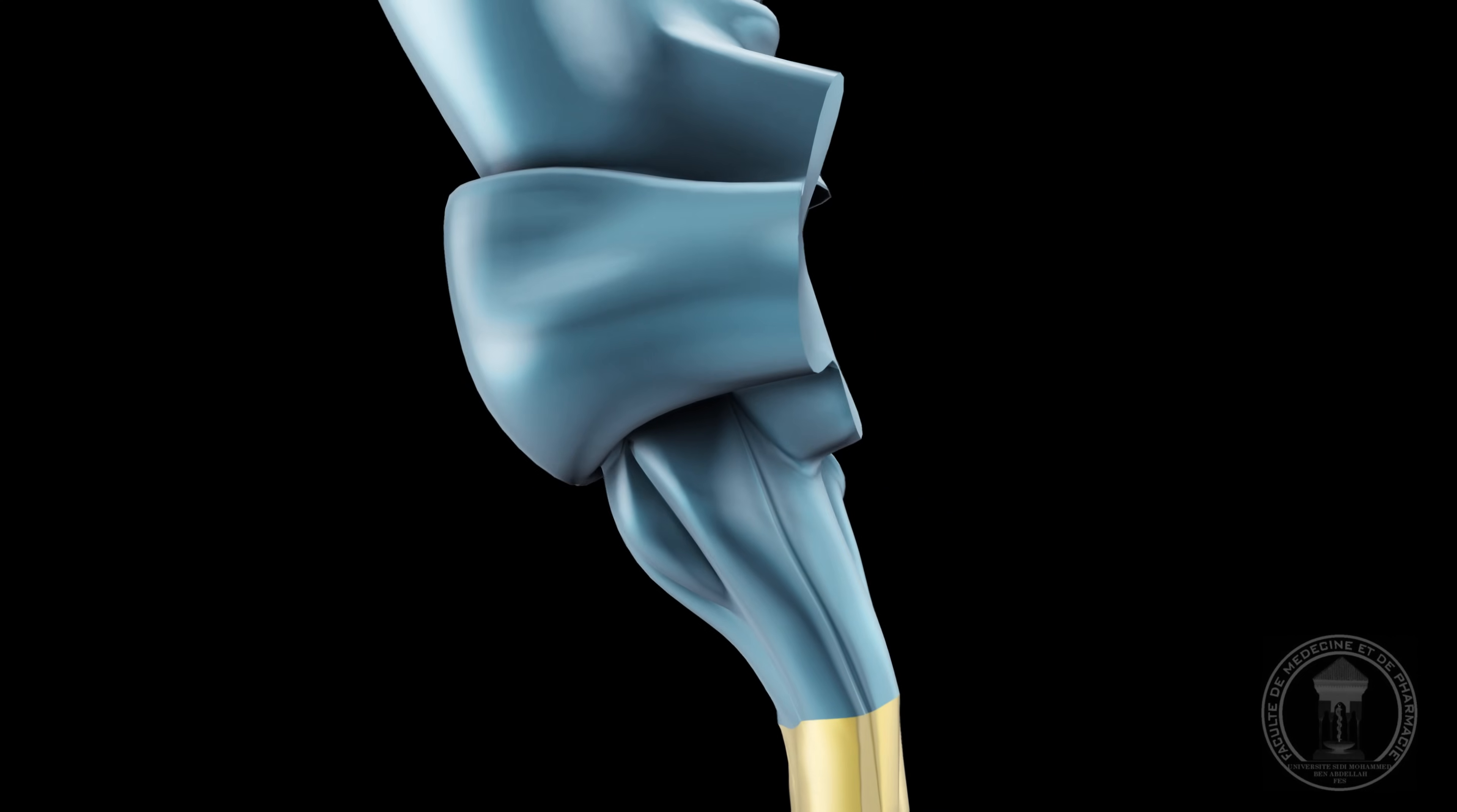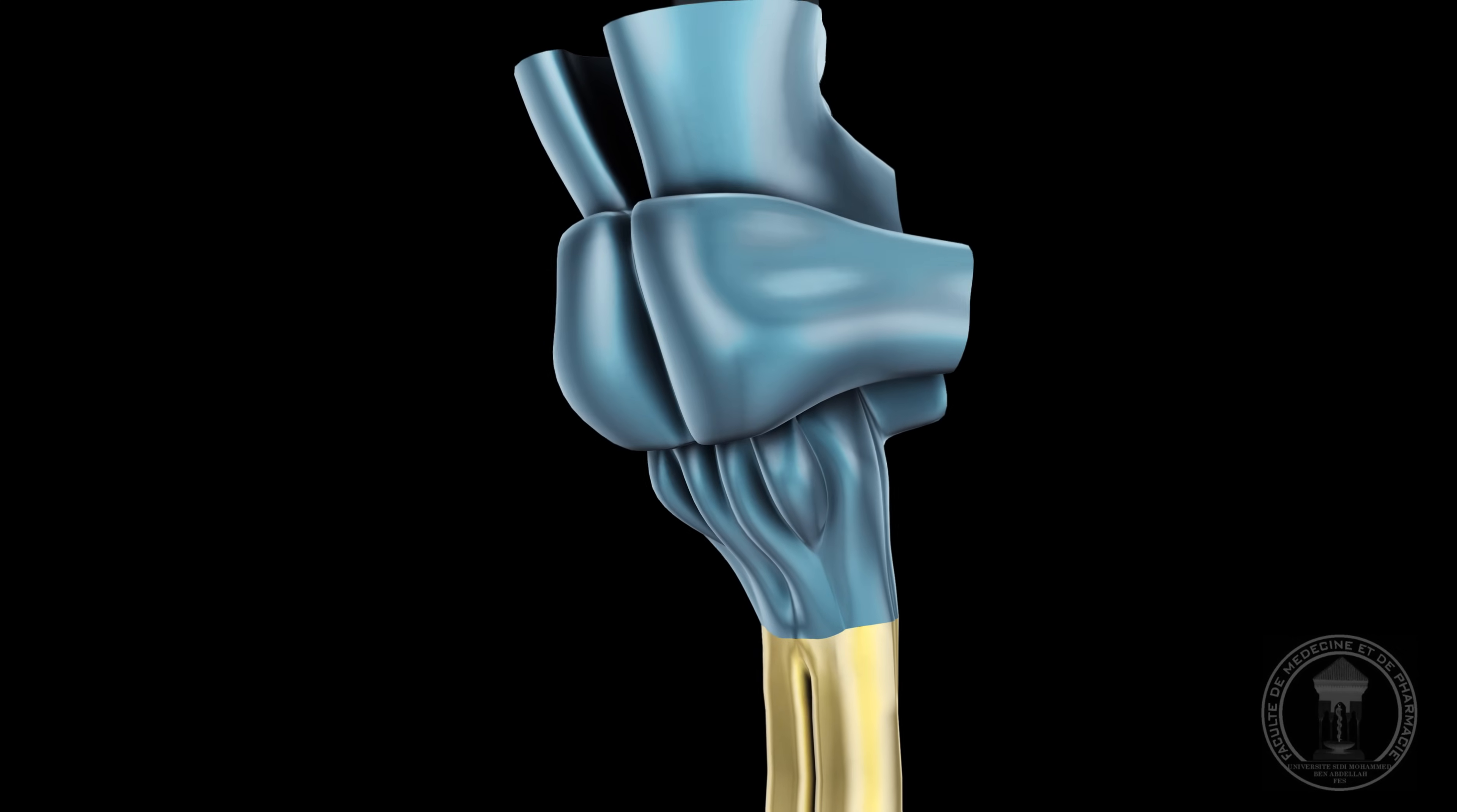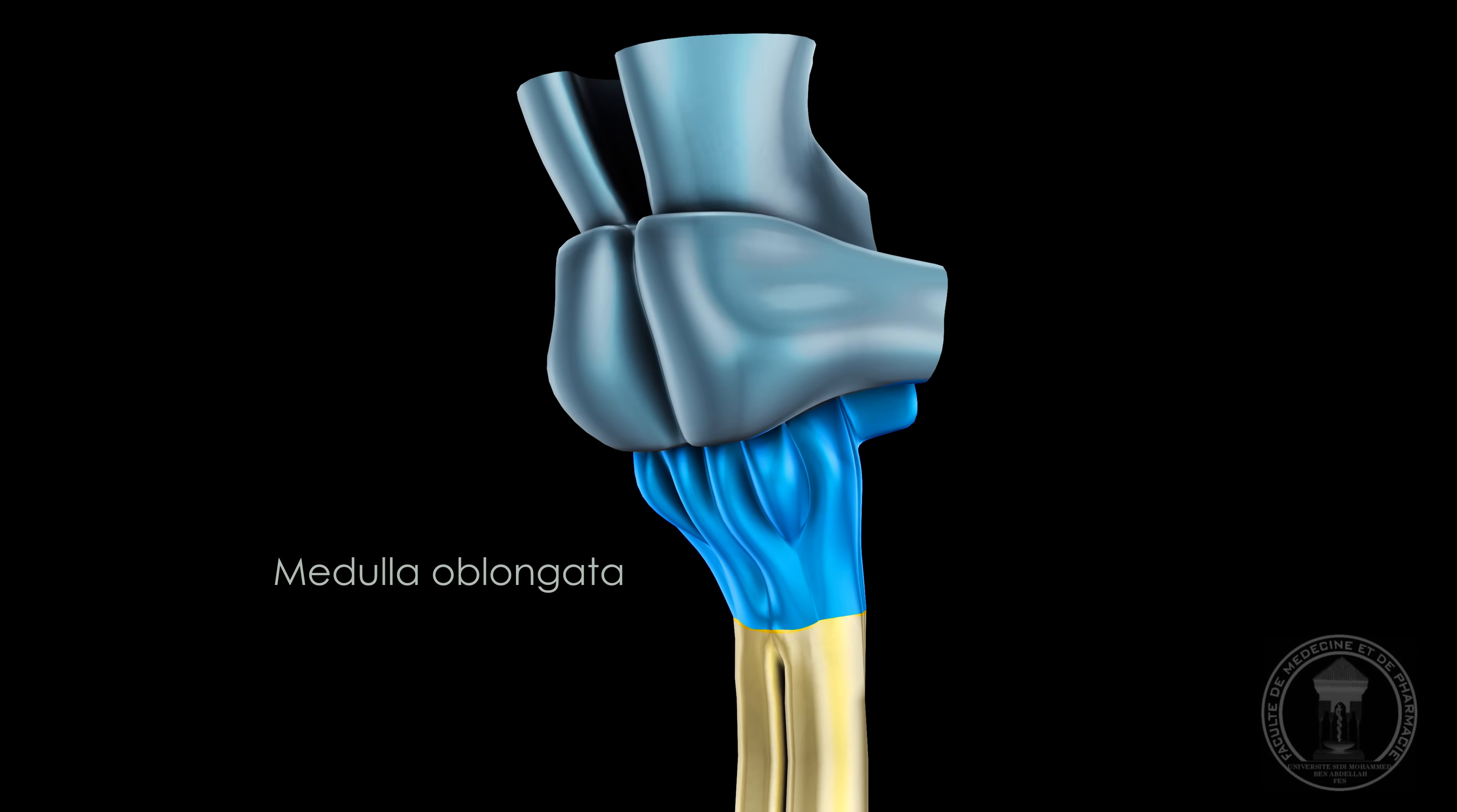The medulla oblongata is the portion of the brainstem between the pons and the spinal cord. The medulla contains the olivary and a pair of pyramids that contain the corticospinal fibers of the pyramidal tract.